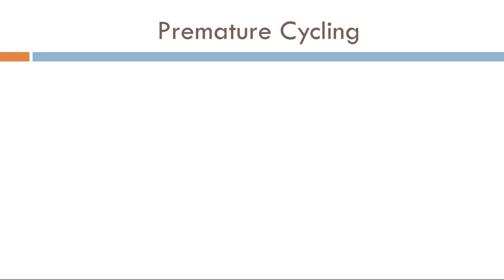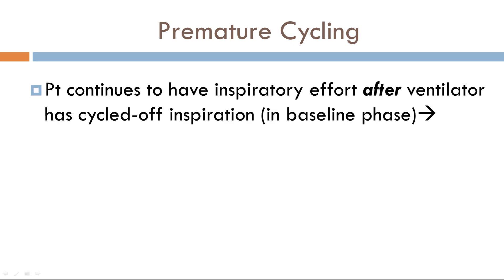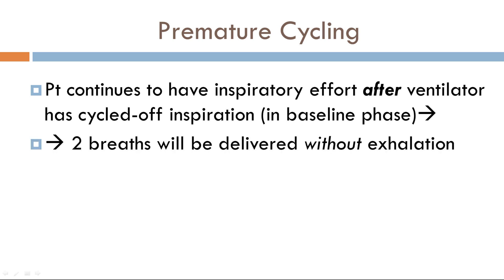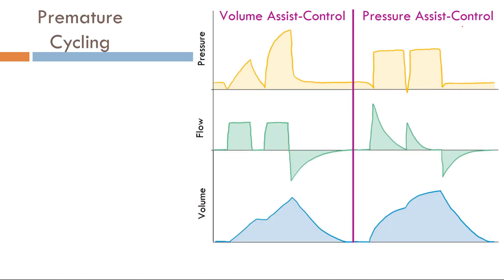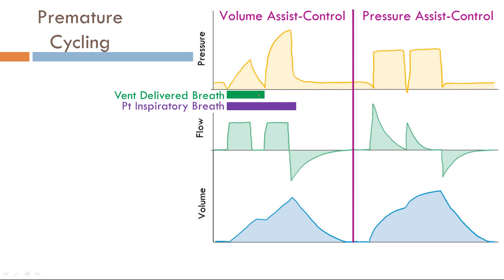In premature cycling, the patient will continue to have inspiratory effort after the ventilator has cycled off inspiration or terminated the breath. One distinguishing feature about premature cycling is that two breaths will be delivered without exhalation. Premature cycling looks different in volume assist control ventilation and pressure assist control ventilation. Here, the green line designates what the ventilator has delivered, while the purple line shows the patient continues to inspire even after the ventilator has cycled the breath.